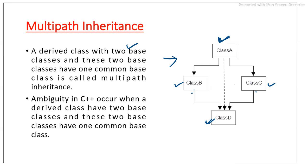This is multipath inheritance. Sometimes ambiguity may occur in C++ when executing this type of multiple inheritance. This ambiguity arises due to confusion for the compiler, because the two base classes both have a common base class.